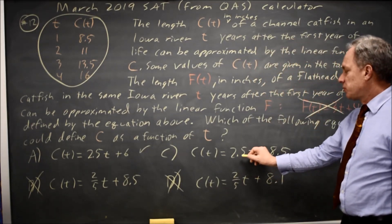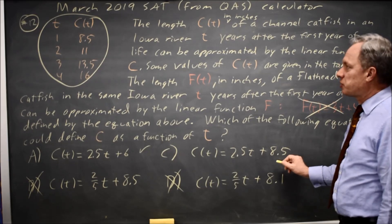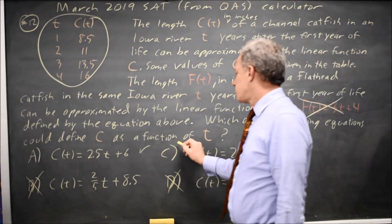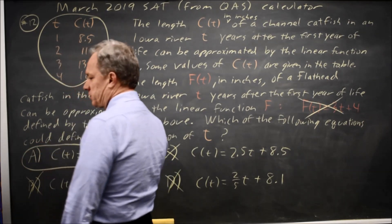At T equals 1, this is 2.5 times 1 is 2.5 plus 8.5 is 11. I'm only supposed to get 8.5. So choice C is wrong. The correct answer would be choice A.